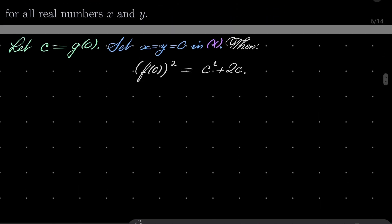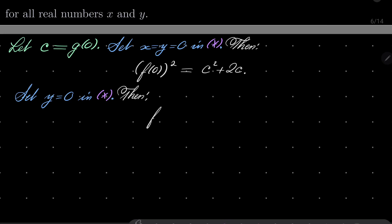Now let's set only y to be 0 in condition asterisk. Then we have f(0)·f(x) equals, on the right hand side, g(0)·g(x) + g(x) + g(0), which is c·g(x) + g(x) + c.